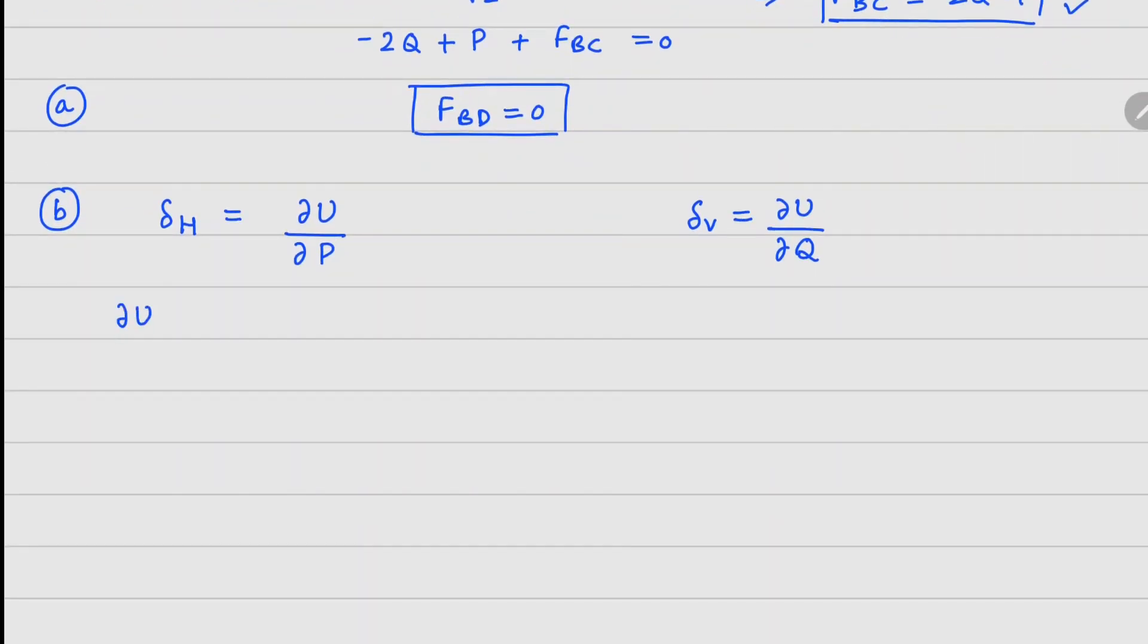Your derivative of U with respect to P can be written as your force in member ij times derivative of that force with respect to P times the length over stiffness of that member ij.